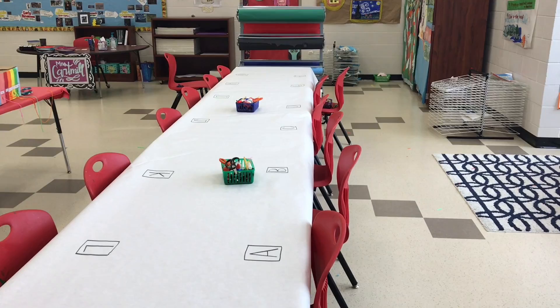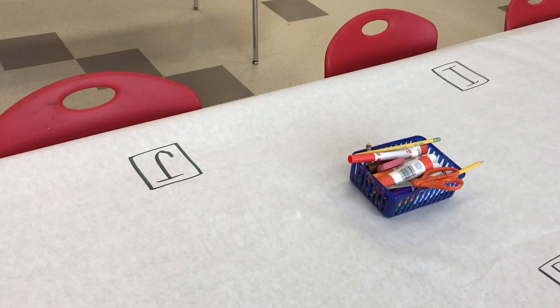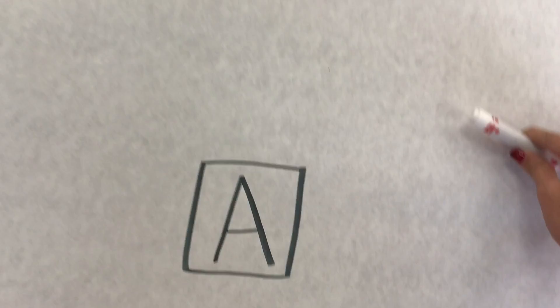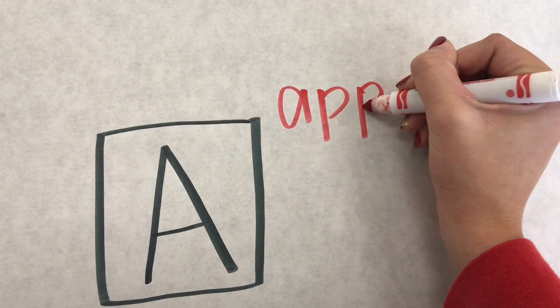As you can see, the tables have letters. I can come around and help you add a letter. For instance, I would maybe add 'apple.' Be sure you write smaller — you can write smaller than that.